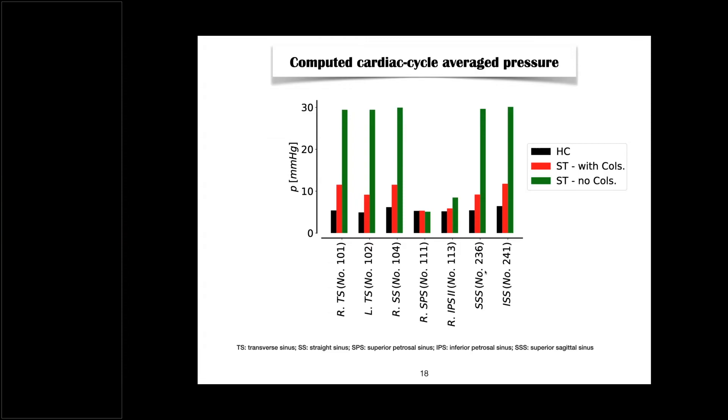Now, what you see here are various vessels. For example, you have the transverse sinus, and here you have the superior sagittal sinus here. You have the inferior petrosal sinus, and so on. Various vessels here along this axis. And then you see, on the vertical axis, the pressure. But the computed average pressure within the cardiac cycle.